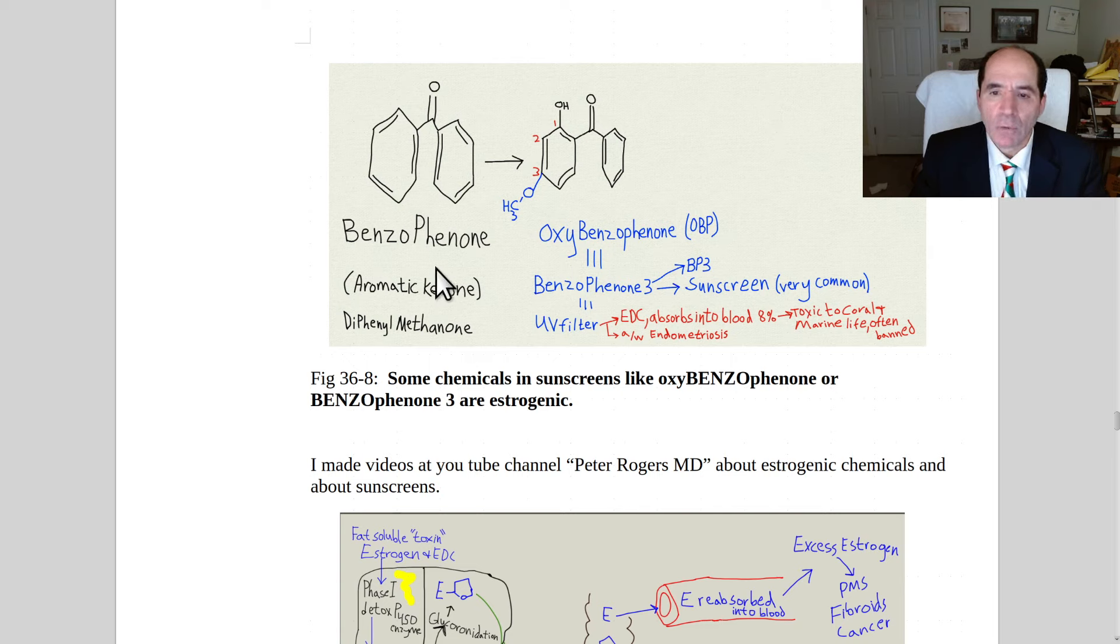This right here is benzophenone, which is used in sunscreens. And there's subtle variations on it: oxybenzone, benzophenone, and benzophenone 3. And the point is these are estrogenic. They got a phenol group on them or something that can function like a phenol group. So it's one of the reasons why I don't ever wear sunscreen.